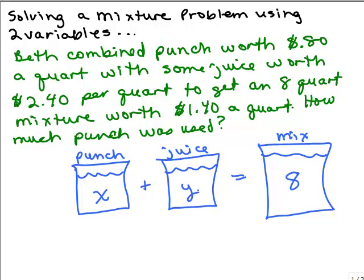All right, what other information is here? We are given the price per quart in each of these containers. So, the unit price per quart, I'm going to write underneath. How much is the punch worth? 80 cents. I'm going to go ahead and do everything in cents. That way I don't have to work with decimals. So this will just be 80 cents. The juice was 240 a quart, so that's 240. And the mixture, that was $1.40, so that's 140.